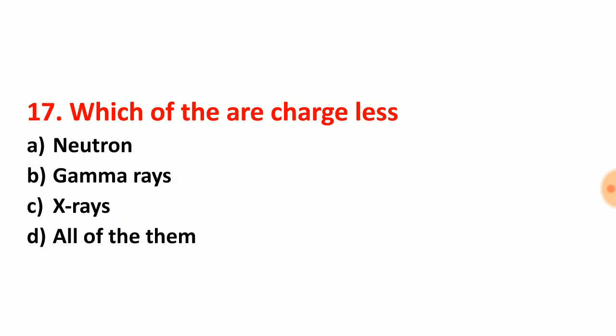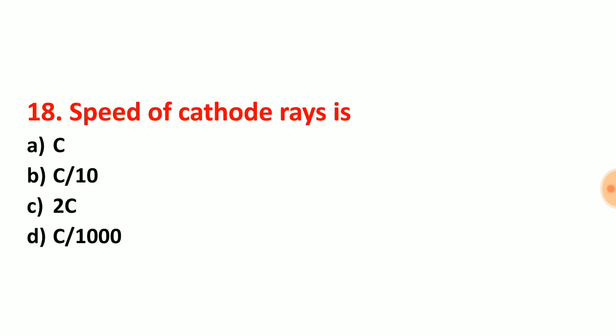Question number 17: which of the following are chargeless — neutrons, gamma rays, X-rays — all are chargeless. Chargeless particles are never deflected by electric and magnetic fields. So for question number 17, the right answer is all of them — all are chargeless.